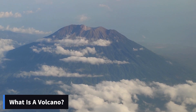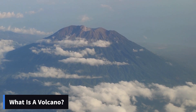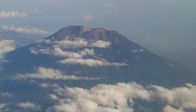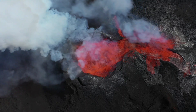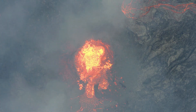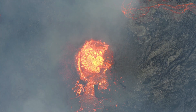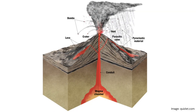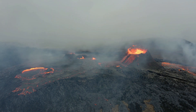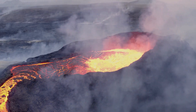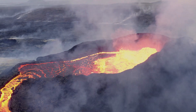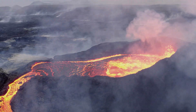A volcano is a geological structure that consists of a vent or multiple vents, through which molten rock, ash, and gases erupt from the Earth's interior. Volcanoes can be triggered by a variety of factors, including pressure and temperature changes in the magma chamber beneath the surface. When these conditions are met, magma can erupt in a variety of ways, including lava flows, ash clouds, and pyroclastic flows.